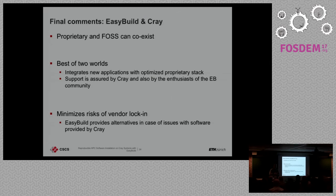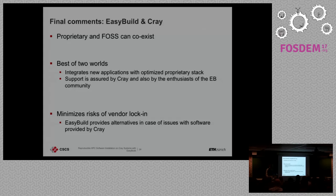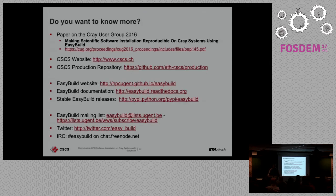The final comments: proprietary and open source software can coexist. We had the case where we used open source to better exploit our system and what we had available. We got the best of both worlds: an optimized software stack, support from both the community and the vendor, and minimized risk of vendor lock-in — meaning we have an alternative. When we had a problem with the software shipped by the vendor, we managed to rebuild everything with open source and didn't need their software stack anymore in that case.